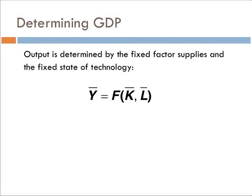We're going to begin with a pretty restrictive simplifying assumption that in later chapters we'll try to relax a bit. We're going to assume that the supply of capital is fixed, the supply of labor is fixed, and the state of technology is fixed. If all those things are fixed, then our production, or potential GDP, is fixed. So aggregate supply Y is fixed, determined by K-bar and L-bar, with fixed technology — nothing in the production function is changing.